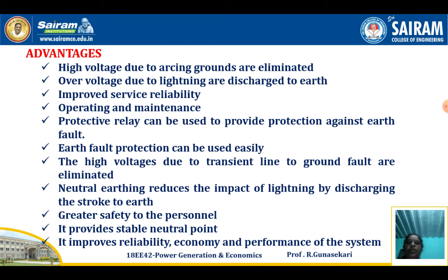Advantages of neutral grounding: High voltages due to switching grounds are eliminated. Overvoltages due to lightning or discharge to earth are reduced. Improved service reliability. Operating and maintenance is very easy. Protective relays can be used to provide protection against earth faults. The high voltages due to transient line-to-ground faults are eliminated. Neutral earthing reduces the impact of lightning by discharging the stroke to earth. It provides greater safety to personnel, a stable neutral point, and improves the reliability, economy and performance of the system.